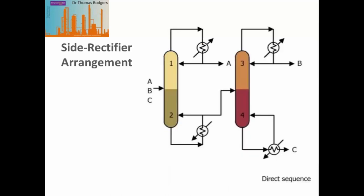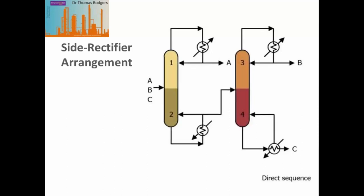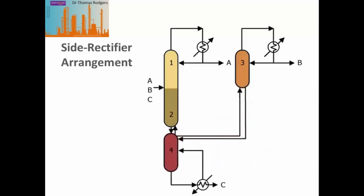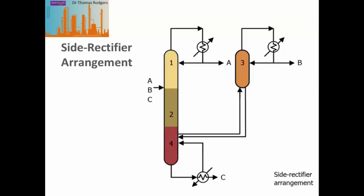The side rectifier column is a rearrangement of the direct sequence. In this case, we remove the reboiler from the bottom of our first column, take our vapour from the second column and put that into the first column, and our liquid from the first column into the second column. This allows us to move section 4 of our second column over to the bottom of our first column. What we've done is removed one of the reboilers from our two-column arrangement, saving energy and costs because we only have one reboiler in our sequence.